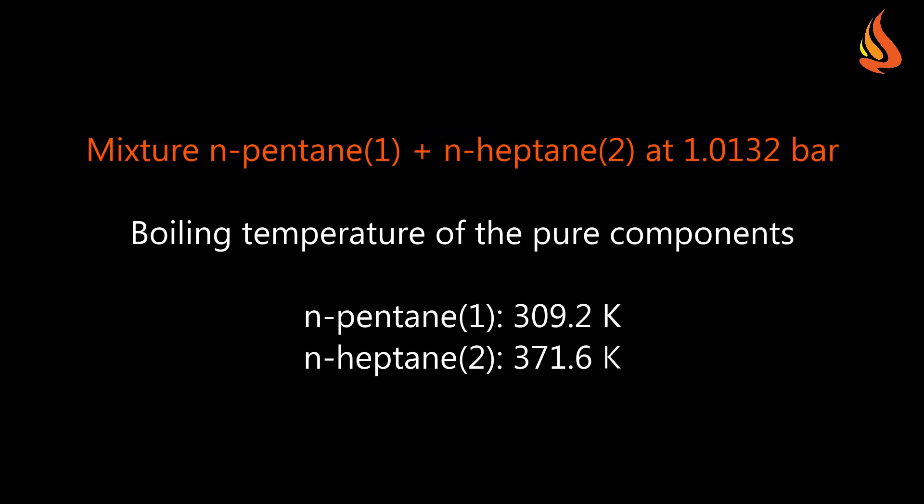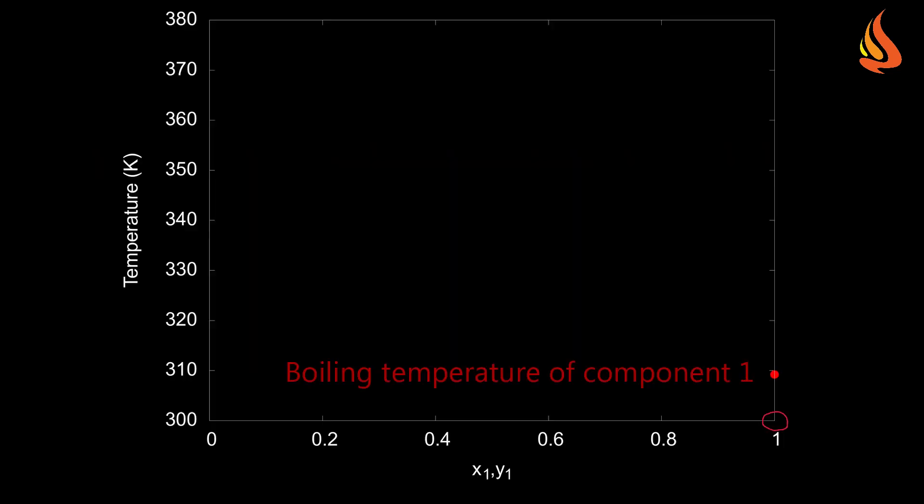We will consider a mixture of n-pentane and n-heptane at atmospheric pressure. At this pressure, the boiling temperature of n-pentane is equal to 309.2 Kelvin and the boiling temperature of n-heptane is 371.6 Kelvin. N-pentane has the lowest boiling temperature and therefore is the component with the highest volatility. In this plot, the temperature is on the vertical axis.